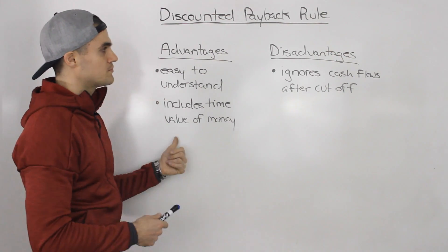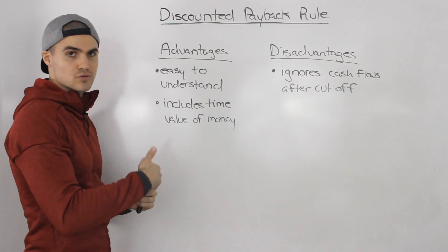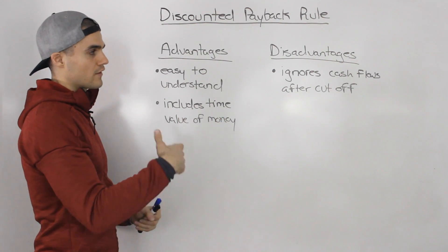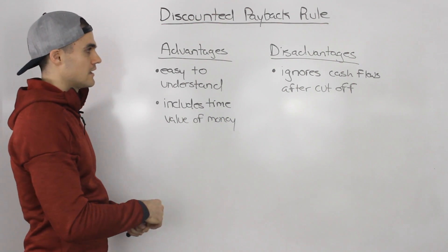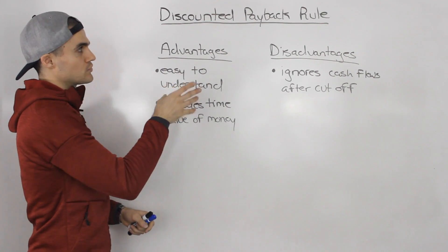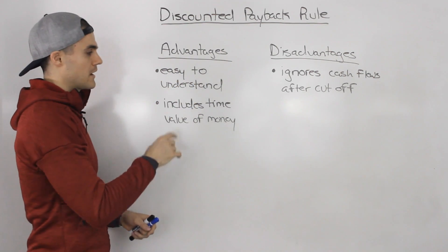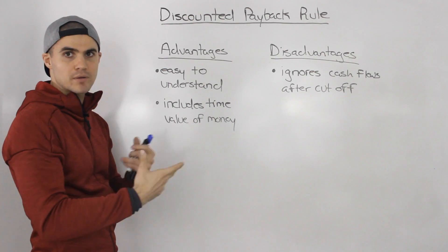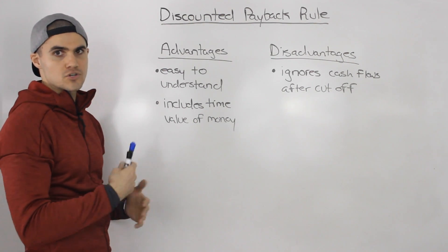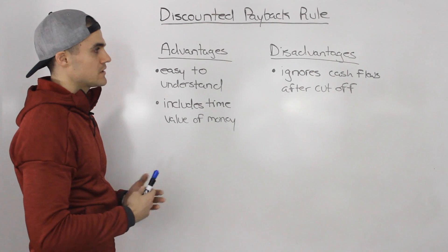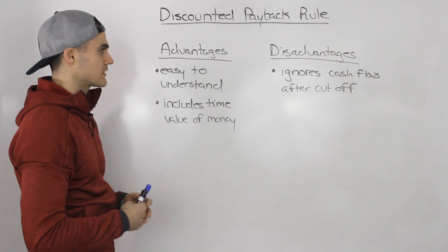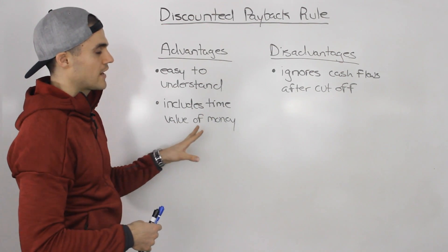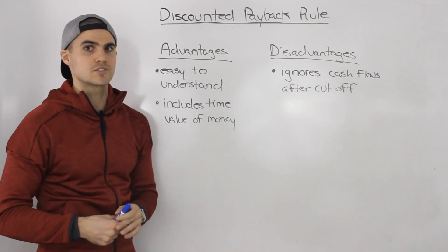However, this bias can also be an advantage. Longer-term cash flows are uncertain and carry more risk. These payback rules favor short-term projects — they like cash flows happening quickly — which frees up more money and provides more liquidity. So depending on your perspective, that can be a good thing as well. Know these advantages and disadvantages, as they can come up on your midterm or exam.